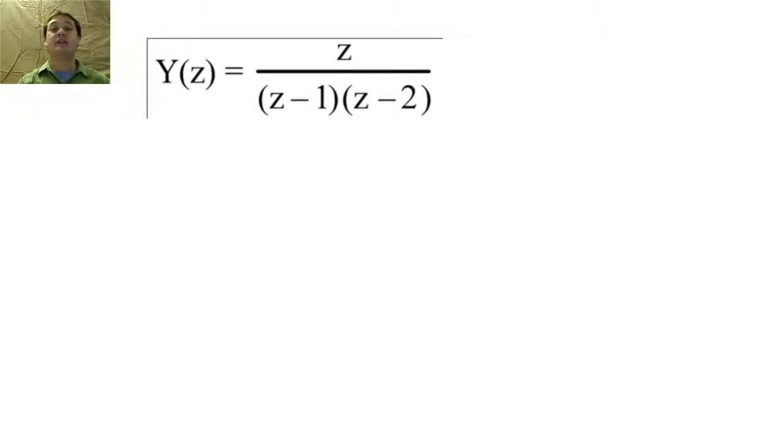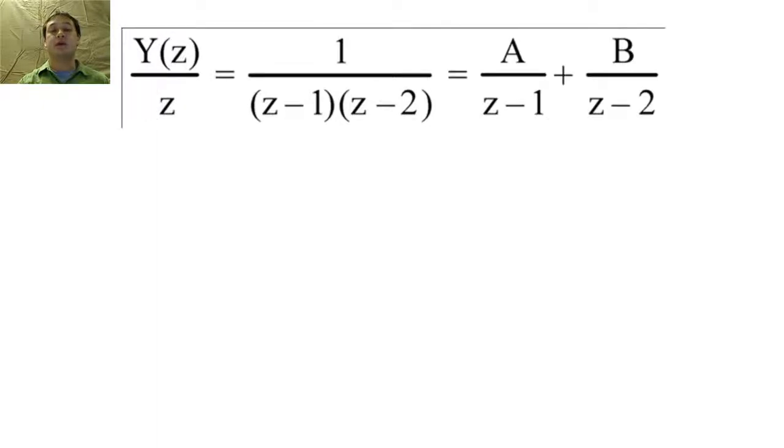If we have this Y of Z, we can find the inverse Z transform by using partial fraction expansion, just like the one-sided Z transform. And then we would calculate the values of A and B using the methods that we have discussed before.